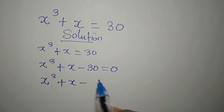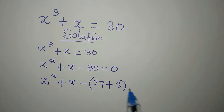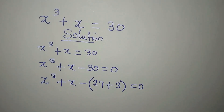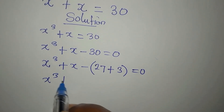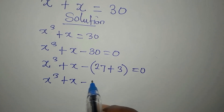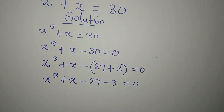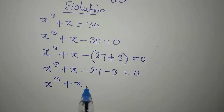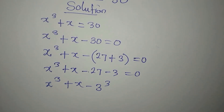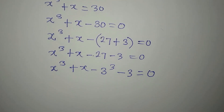The simplest method is to break 30 into two parts to fit a useful form. We have 27 + 3, which equals 30, and we equate to 0. So we have x³ + x - 27 - 3 = 0. Now x³ + x - 3³ (because 3³ = 27) minus 3 equals 0.